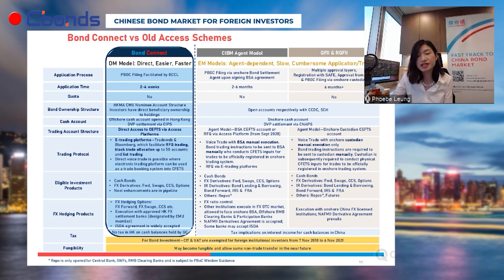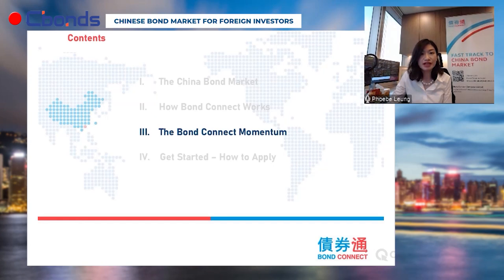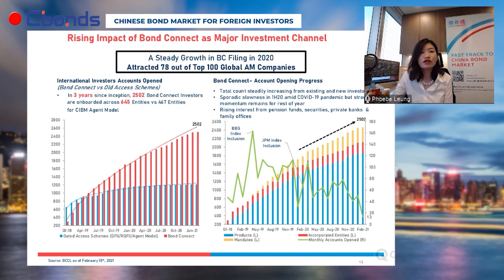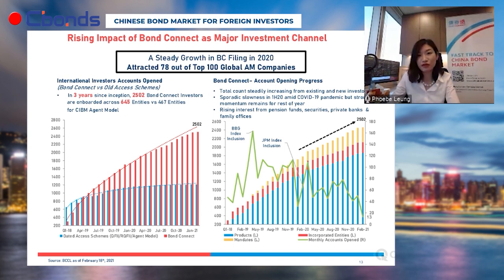The application process takes about three to four weeks on average, with the quickest approval seen in around three days, especially with the launch of our e-filing system last year. The rising impact of Bond Connect is evidenced by the speed of client adoption: we have crossed over 2,500 investors before Chinese New Year, with a 165 percent year-on-year increase, far exceeding the total number across all traditional schemes such as QFII, RQFII, and the CIBM agent model since April last year.